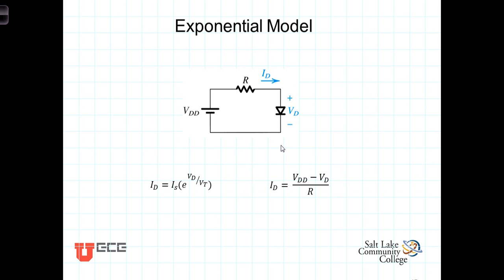As we've seen, the diode equation models the exponential relationship between current and voltage in a forward-biased diode. Because of this exponential relationship, a diode operates in a very narrow voltage band, going from non-conducting to fully conducting over just a few tenths of volts. But diodes are generally found in circuits where voltages are greater than a few tenths of volts. In many applications, a limiting resistor is connected in series with the diode. As the diode begins to conduct, the resistor absorbs a portion of the voltage in the circuit.